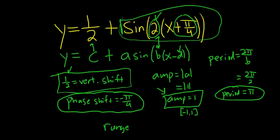When you add 1 half to that, you're adding 1 half to each of these. So that means your range would be negative 1 half to 3 halves. Because you're adding 1 half to each of these numbers: negative 1 plus 1 half is negative 1 half, and 1 plus 1 half is 3 halves.